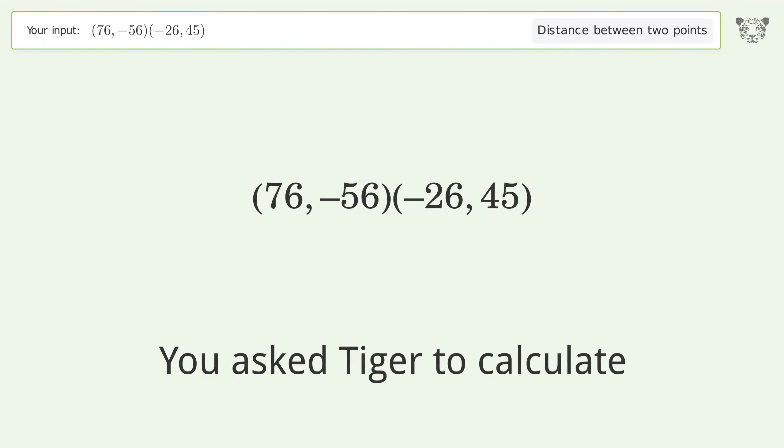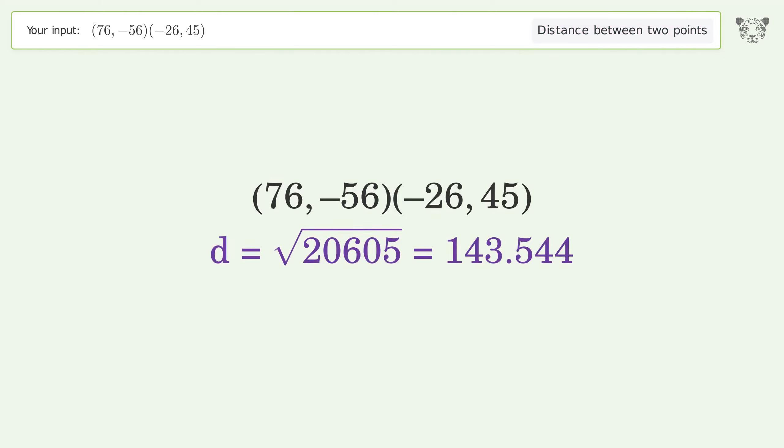You asked Tiger to calculate the distance between two points. The distance between the two points is the square root of 20605, or 143.544.